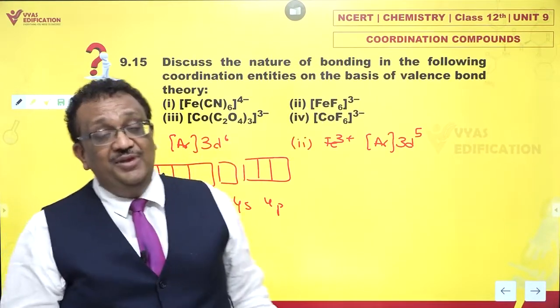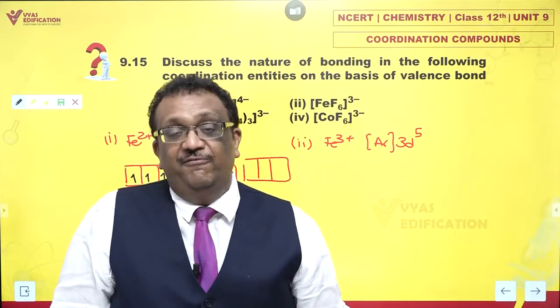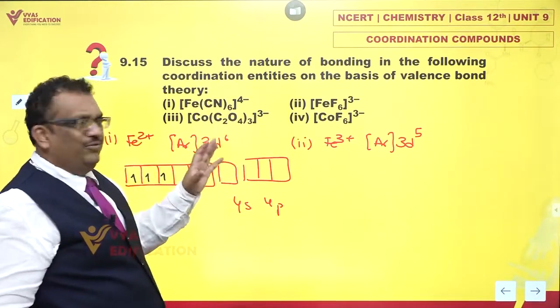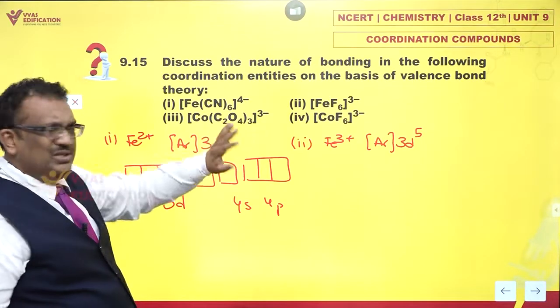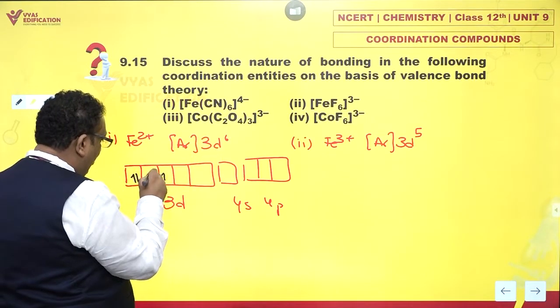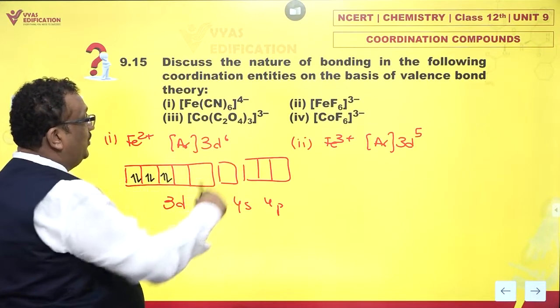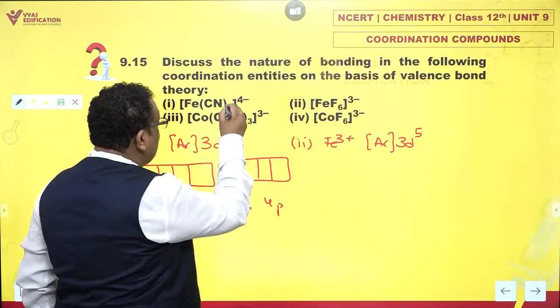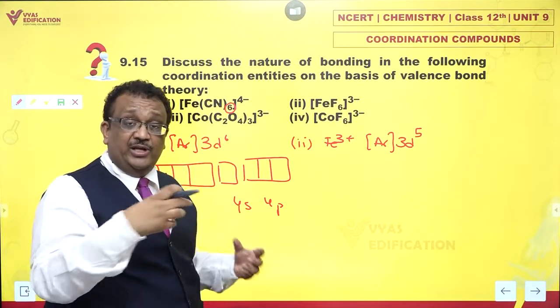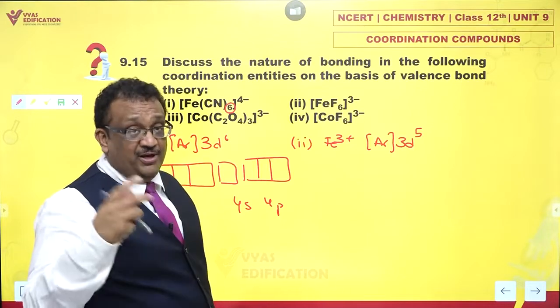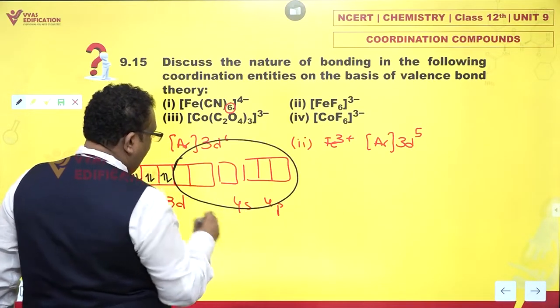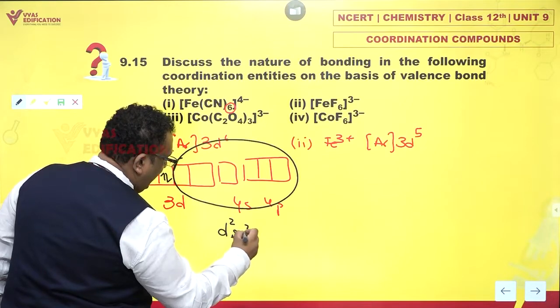F- is a weak field ligand. So usually, very often, electrons cannot be paired by F- or even oxalate ions. Since cyanide is strong field and will cause pairing, this is what I get. These orbitals are empty? Yes. And coordination number is 6. What does this coordination number mean? It clearly means that I need 6 more orbitals to take 6 electron pairs from cyanide ions.